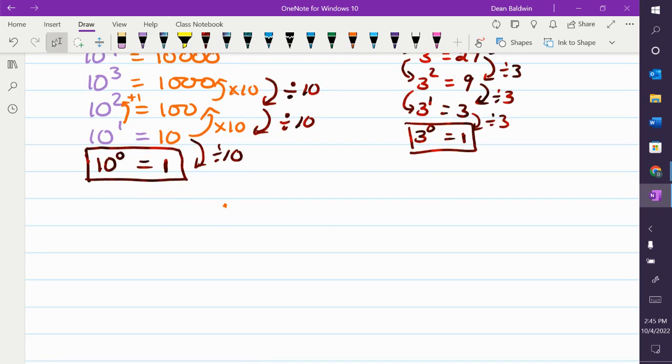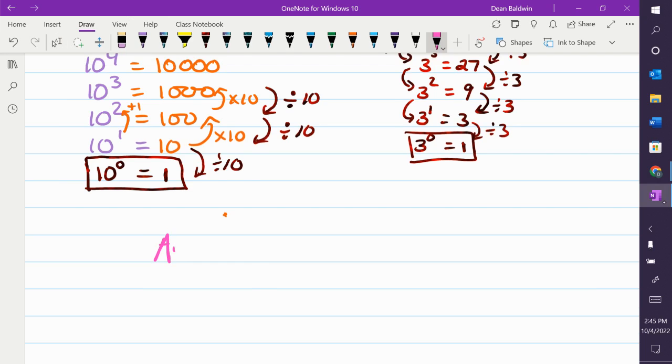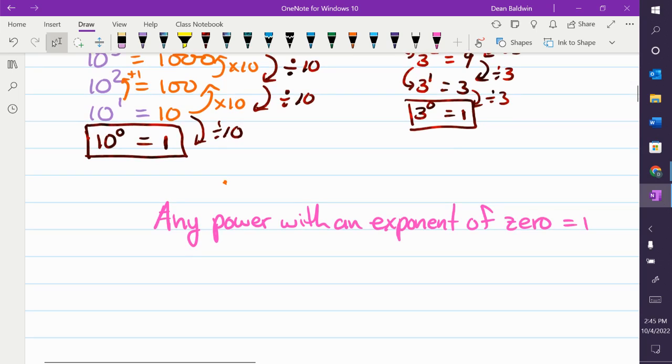Anything to the 0 power is 1. So, pink. Any power with an exponent of 0 equals 1. You need to remember that.